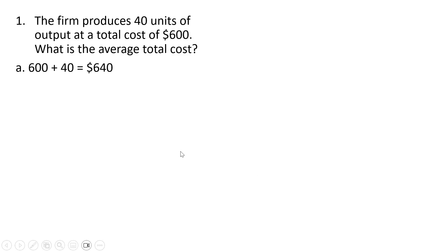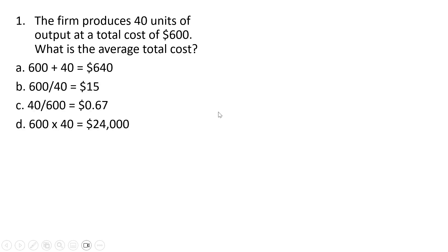Question one. The firm produces 40 units of output at a total cost of $600. What is the average total cost? Average total cost is total cost divided by output, so in this case the answer is 600 divided by 40, which is $15. Answer B.